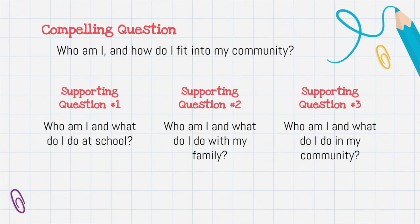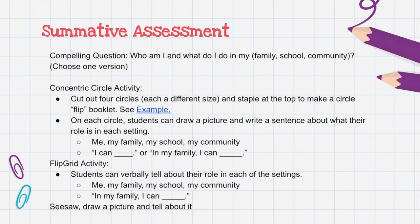This unit is structured around one main compelling question: who am I and how do I fit into my community? And three smaller supporting questions: who am I and what do I do at school, who am I and what do I do with my family, and who am I and what do I do in my community.